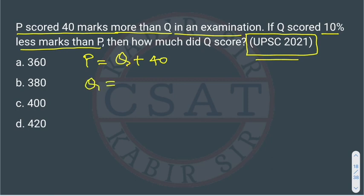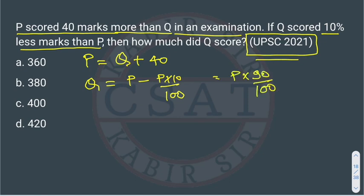Q is scoring 10% less marks than P, which means Q is scoring 90% of P's marks. Both interpretations are the same. Converting to a mathematical equation: 90% of P is equal to Q, i.e., Q = 0.9P.